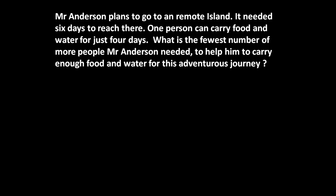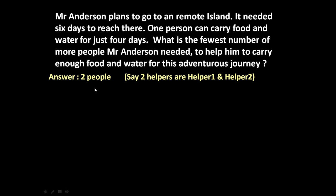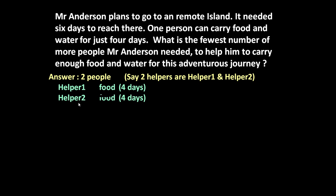The answer to this puzzle is two people. Let us call these two people helper one and helper two. Helper one and helper two will accompany Mr. Anderson. Helper one can carry four days of food, helper two will carry four days of food, and Mr. Anderson himself will also carry four days of food. Now they start the journey with this much food.